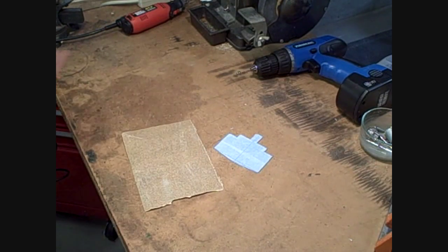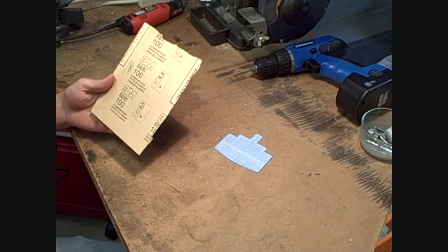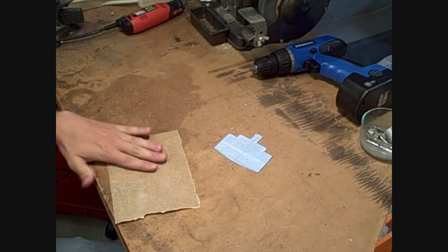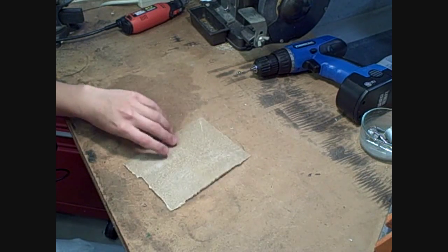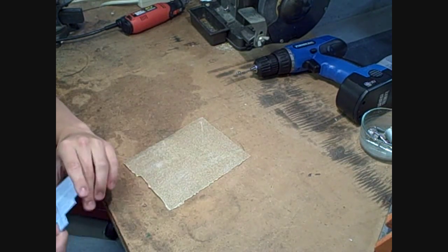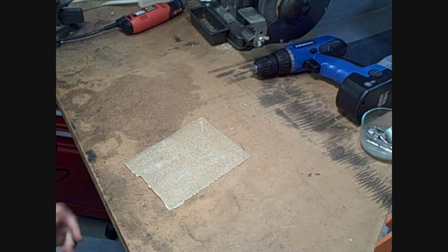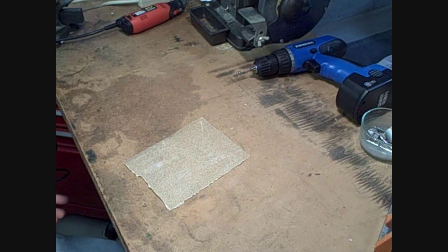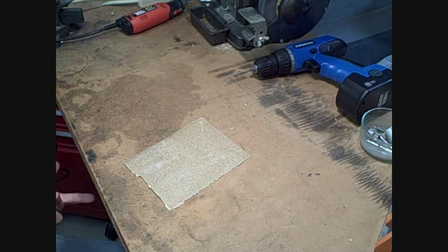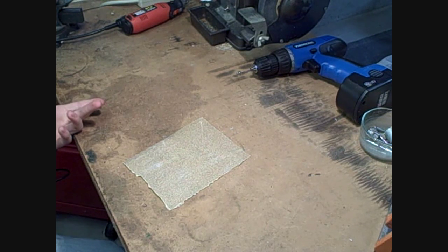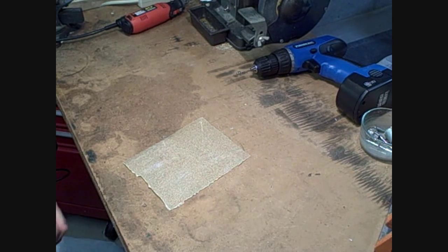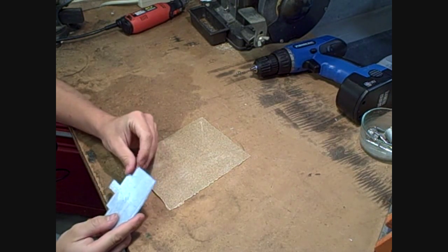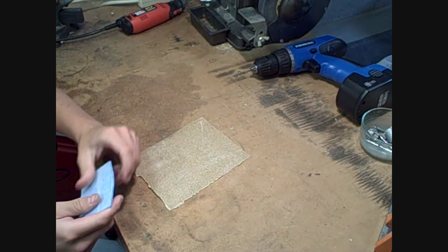All right, so here we got our nice sandpaper. I think this is 100 grit aluminum oxide. Basically just any medium grit sandpaper will work. Obviously the coarser, the faster you'll remove your material, and the finer grit, the smoother your material will end up being. So a nice medium one will be fine for a chassis. You're just going to want to get as close to the line as you can, now clean up your rough cuts.